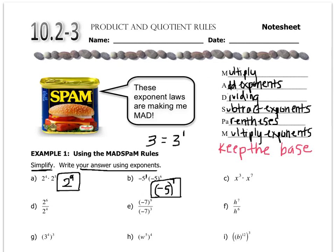In letter C, we have multiplication, and so we add the exponents. Multiplication is add the exponents and keep the base. So that becomes x to the 10th.